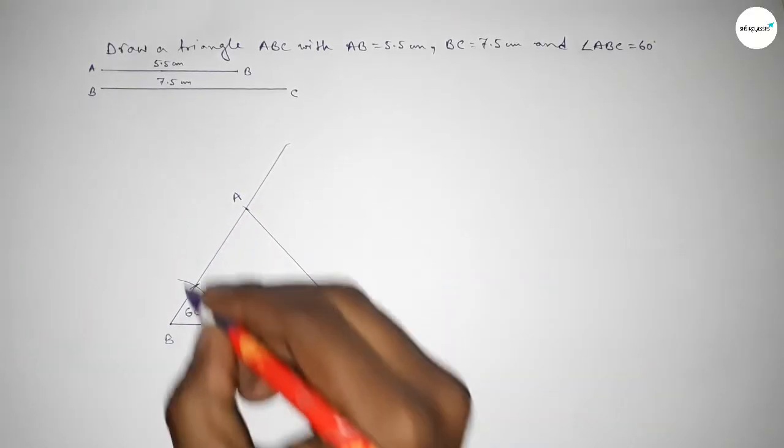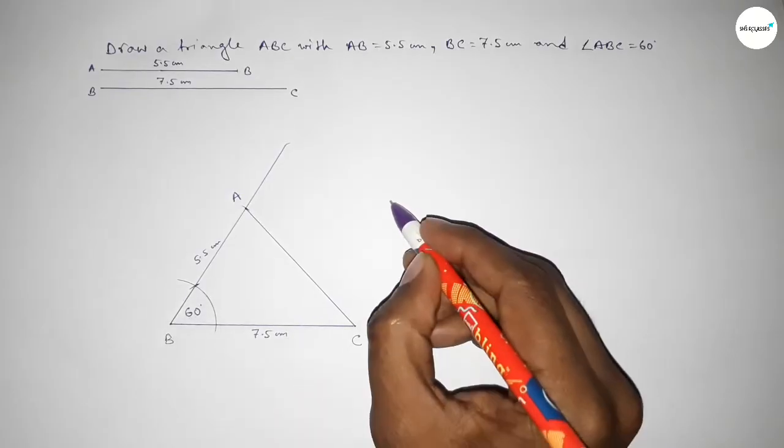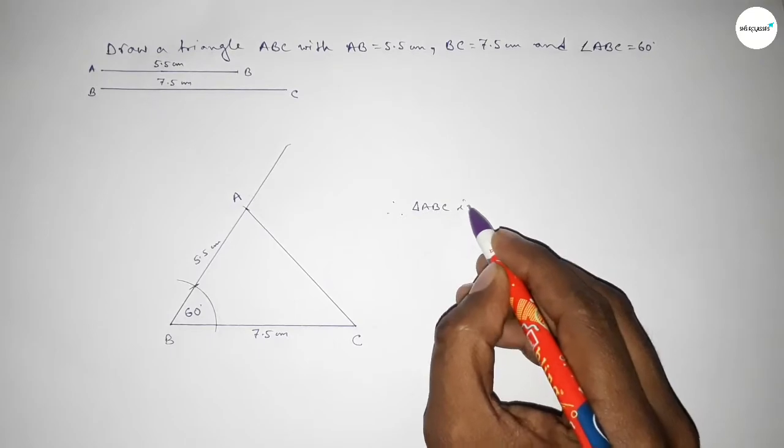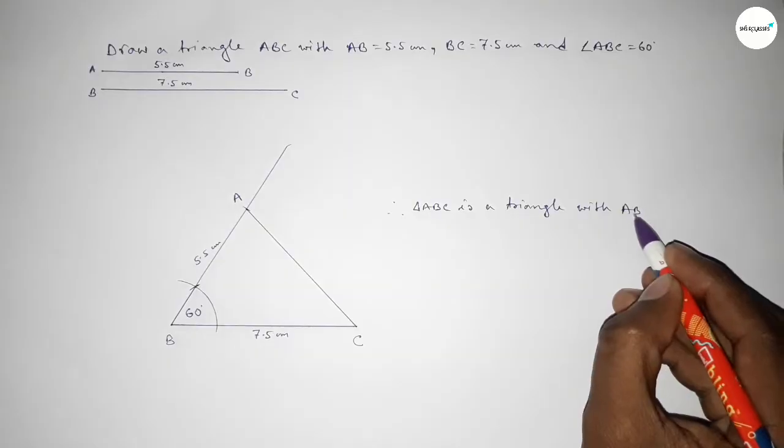So this is 5.5 centimeters and this is 7.5 centimeters. So therefore triangle ABC. Triangle ABC is a triangle with AB equal to 5.5 centimeters, angle ABC equal to 60 degrees, and BC equal to 7.5 centimeters.